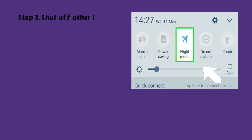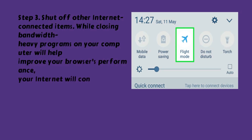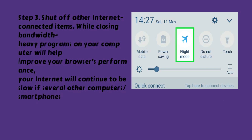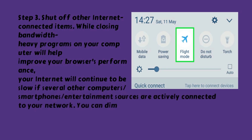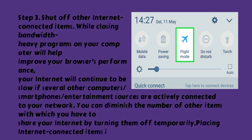Step 3: Shut off other internet-connected items. While closing bandwidth-heavy programs on your computer will help improve your browser's performance, your internet will continue to be slow if several other computers, smartphones, or entertainment sources are actively connected to your network. You can diminish the number of items sharing your internet by turning them off temporarily. Placing internet-connected items in airplane mode will also fix this problem.